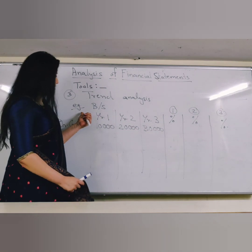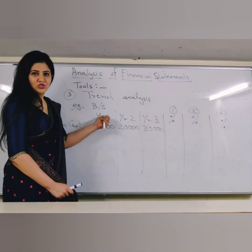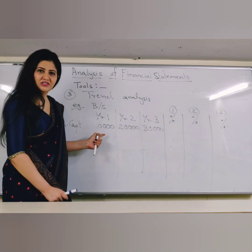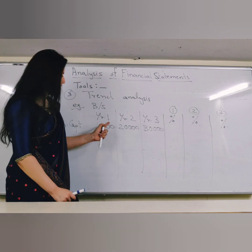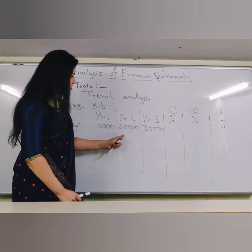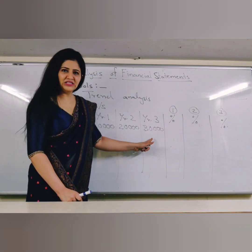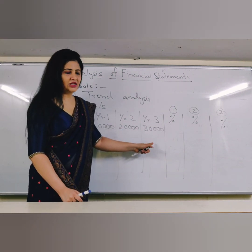Let's take an example of a balance sheet where share capital for the first year is 10,000, second year is 20,000, and third year is 30,000.